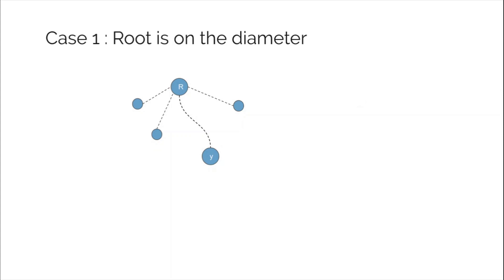Now let's go for the formal proof. The proof is given in two cases. Case one is that the root chosen in the first DFS actually lies on the diameter of the tree. The other case is when the root does not lie on the diameter. For case one, suppose the root r lies on the diameter and the farthest node from root r is node y. We need to prove that node y is actually one of the endpoints of the diameter. We will prove this using contradiction.